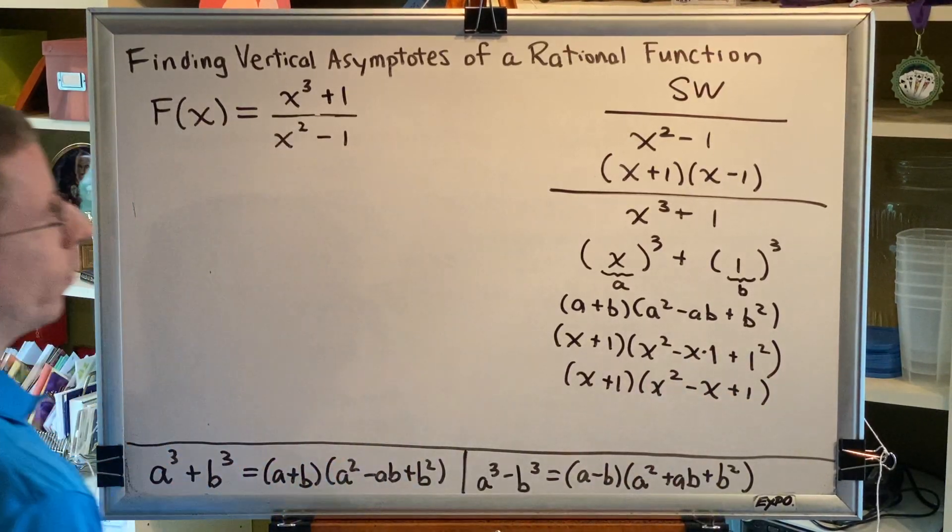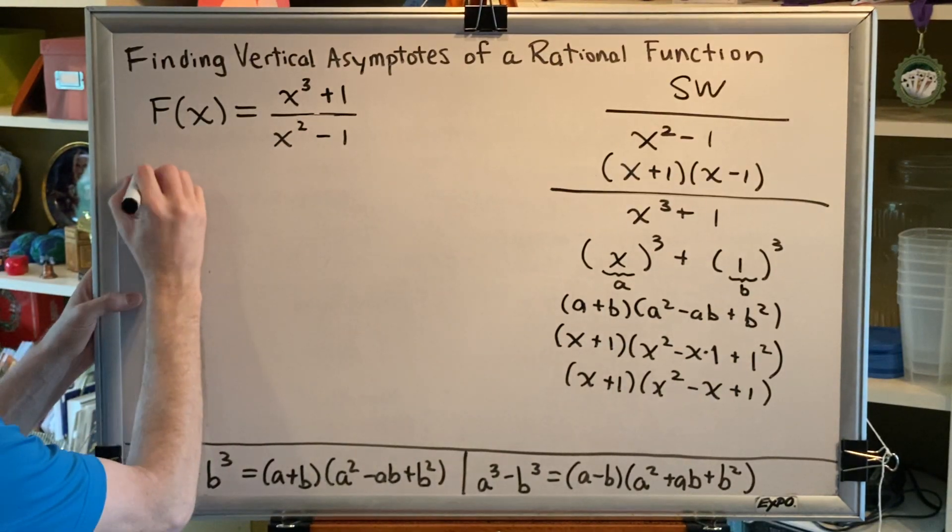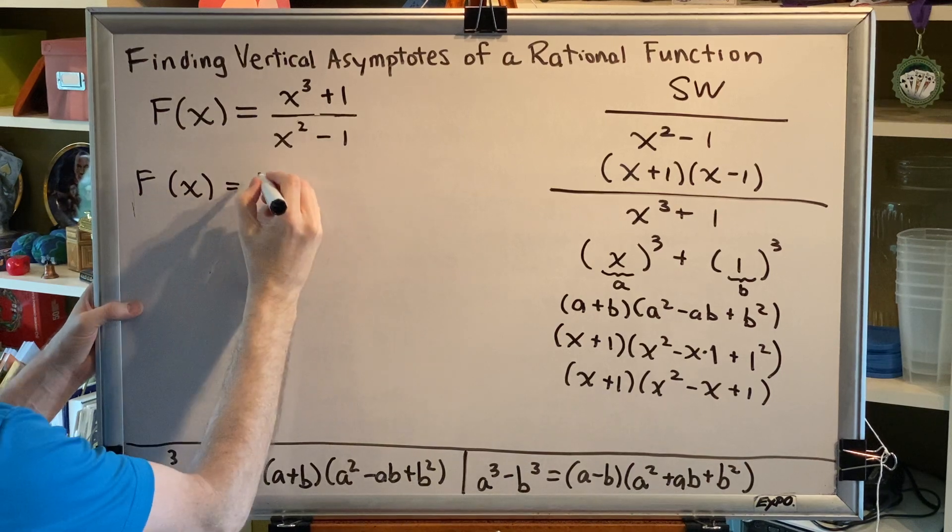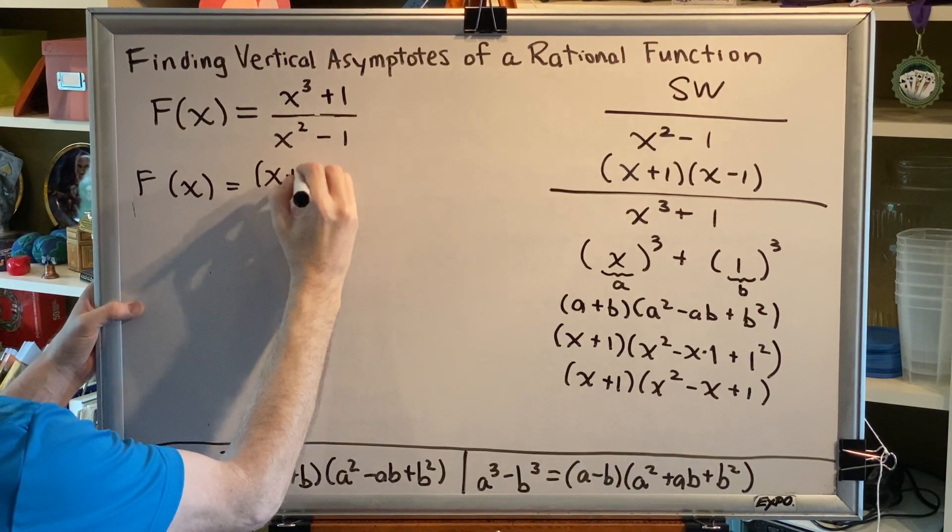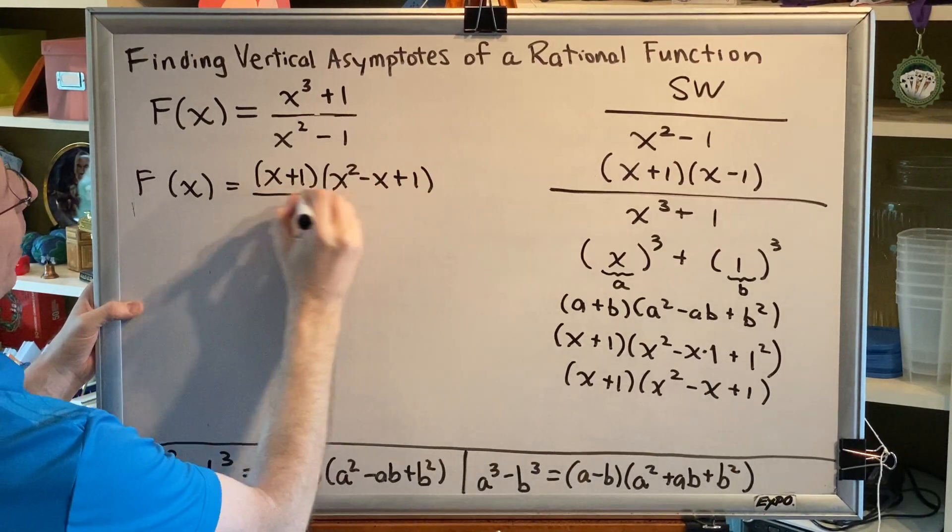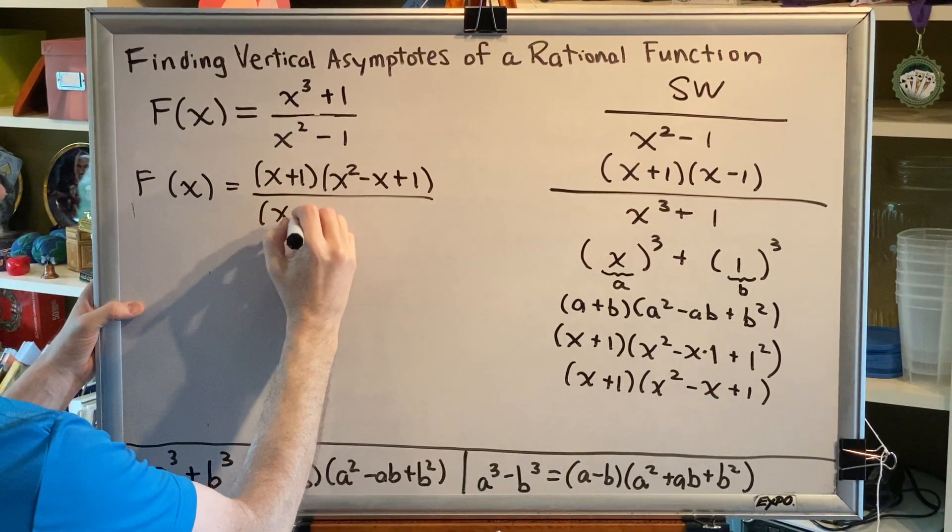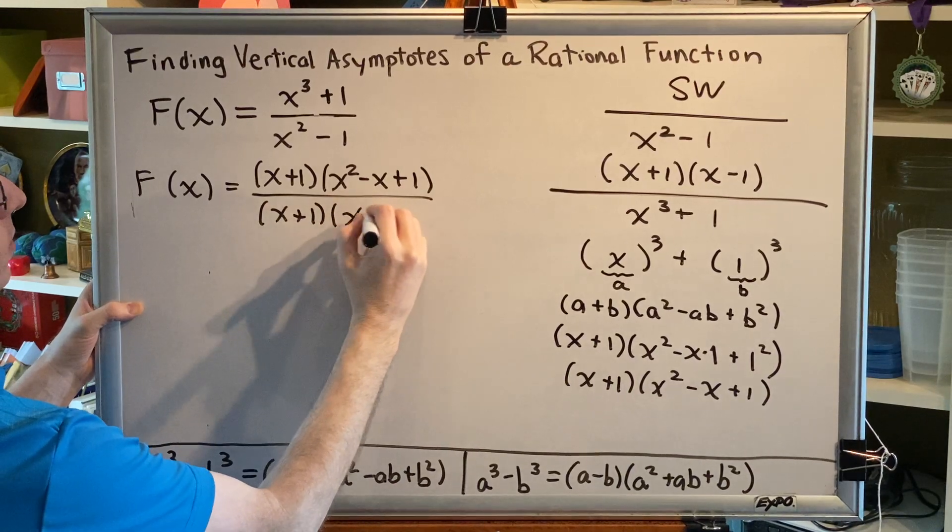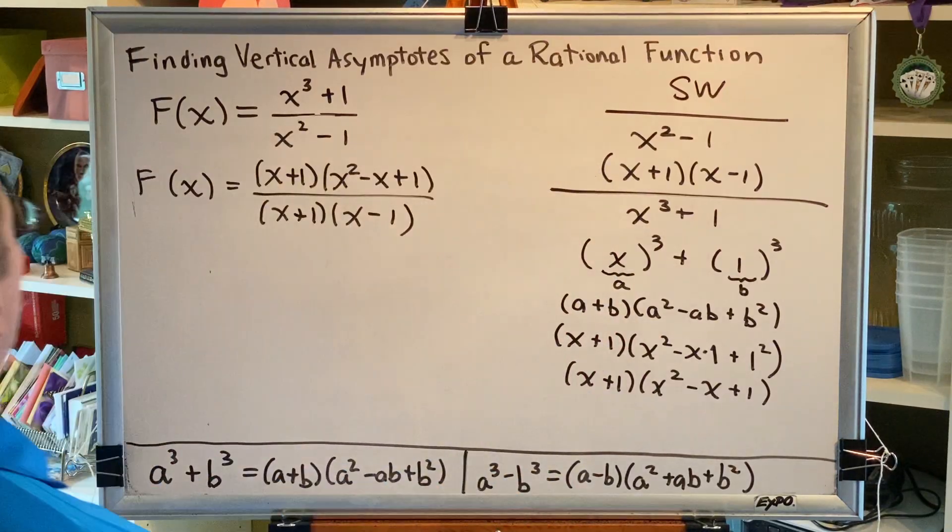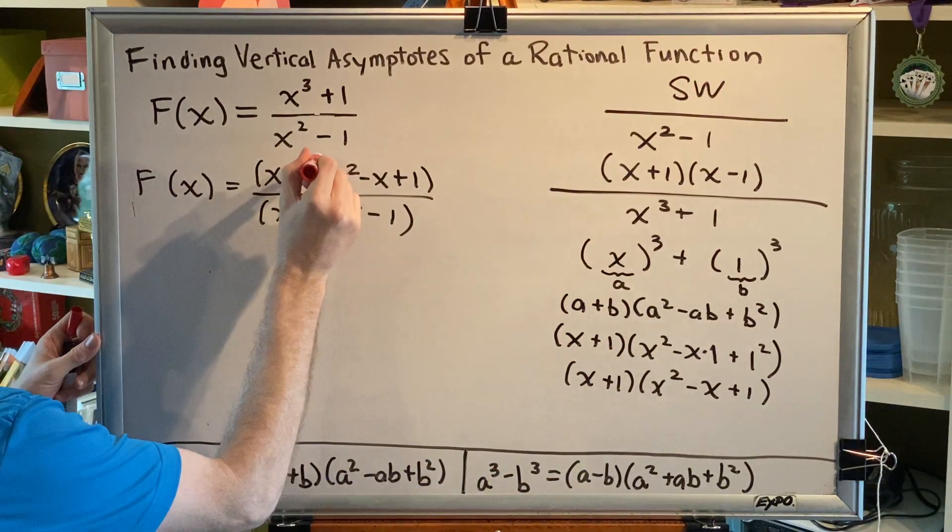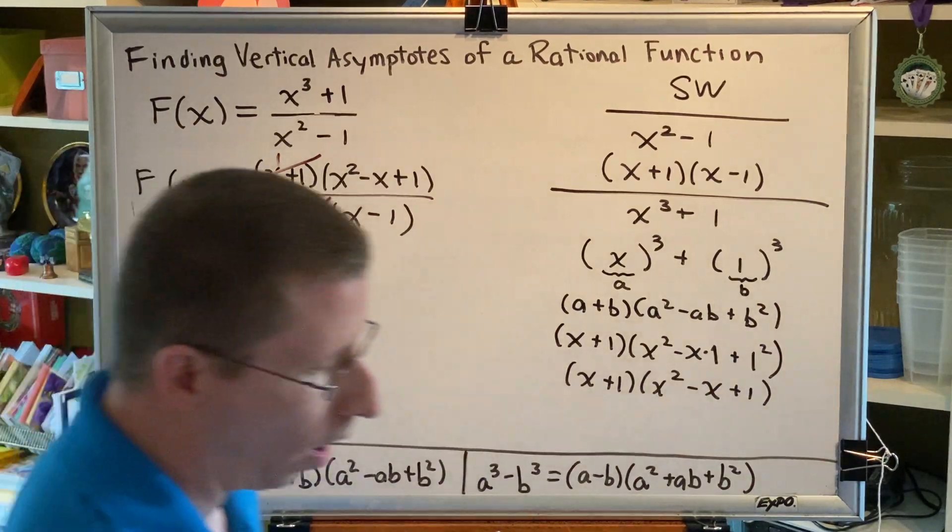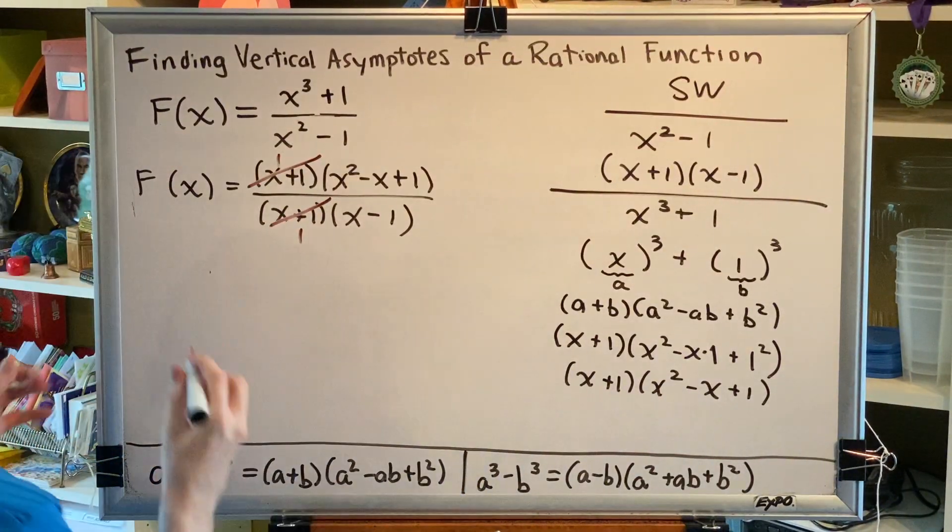Okay, great. We've done both of our factorings, so now we can rewrite our original function using the factored form. So, up top, we're going to get x plus 1, x squared minus x plus 1. And down below, we're going to get x plus 1, x minus 1. Okay, factoring is done. Now comes the reducing step. We notice that we have a common factor top and bottom, so those are both going to cancel to the number 1. And remember that anything times 1 is itself.